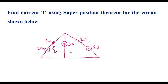In superposition theorem, we need to consider one source at a time. Here we have three sources: a 20 volt independent voltage source, a 5 amp independent current source, and a 2I dependent voltage source. Dependent sources must be kept as they are, and we consider independent sources one at a time. First, I will consider the 20 volt source alone.